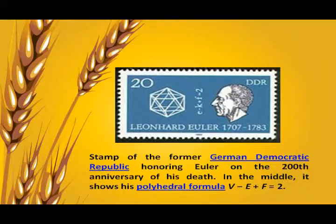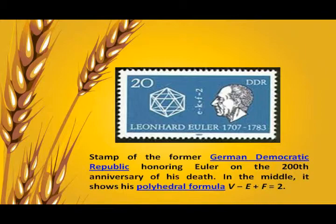Euler also discovered the formula V − E + F = 2, relating the number of vertices, edges, and faces of a convex polyhedron, and hence of planar graphs.